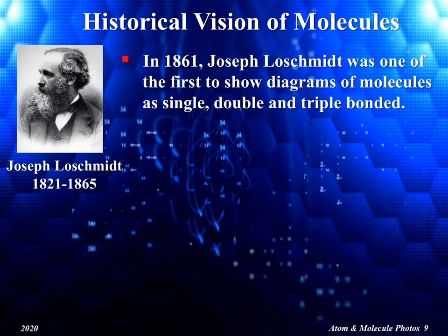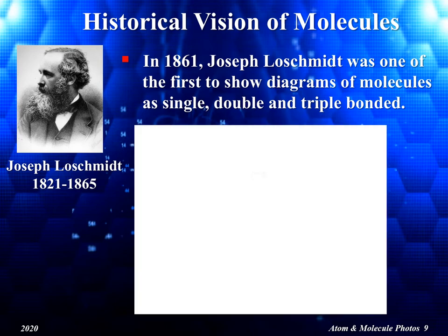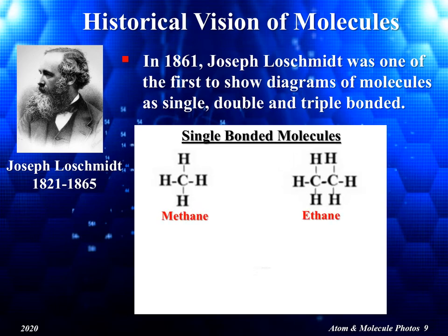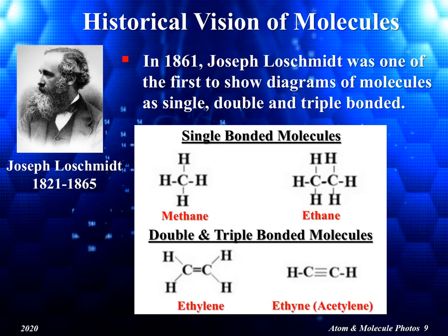It was not until 200 years later that the concept of molecules was recognized. In 1861, a chemist named Joseph Loschmidt was one of the first to show drawings of molecules like those shown in these diagrams. Loschmidt drew molecules with single, double, and triple bonds. Today, chemists use drawings like these to show the structures of organic compounds like methane, ethane, ethylene, and acetylene.